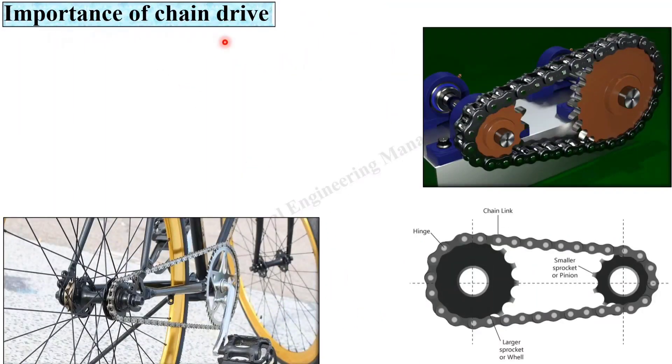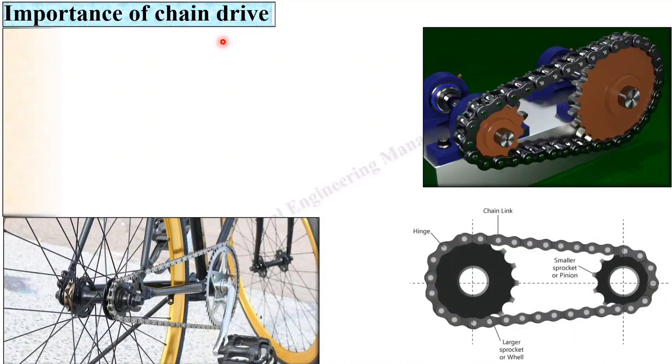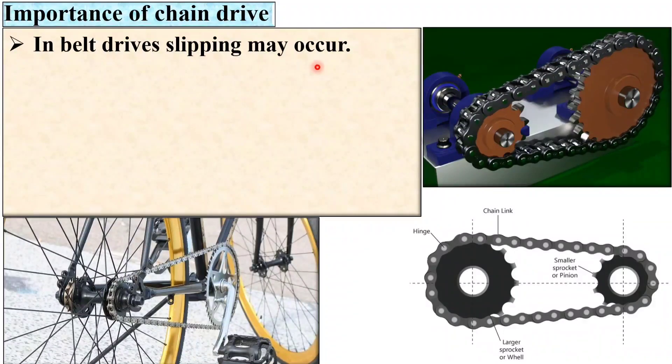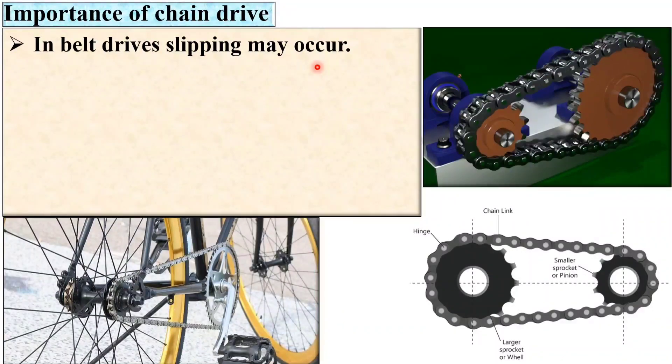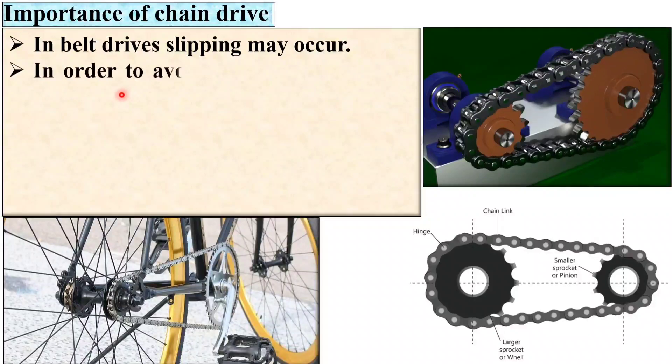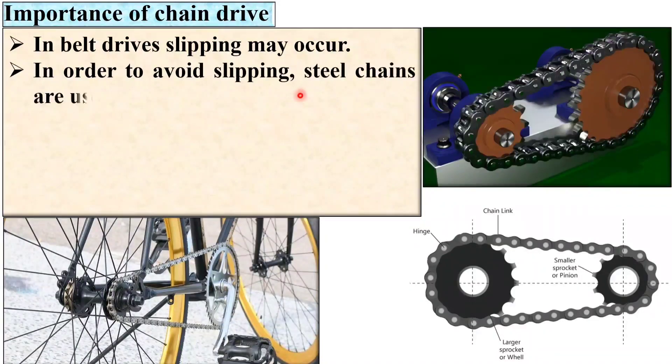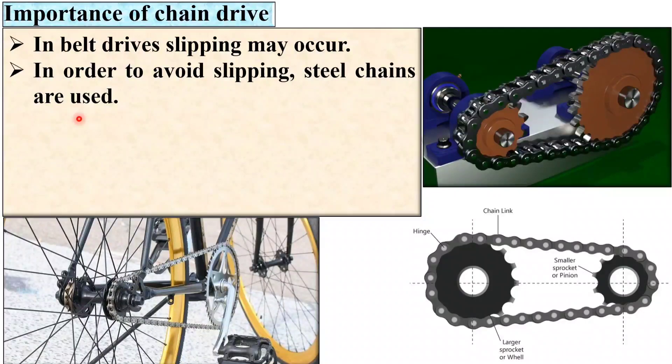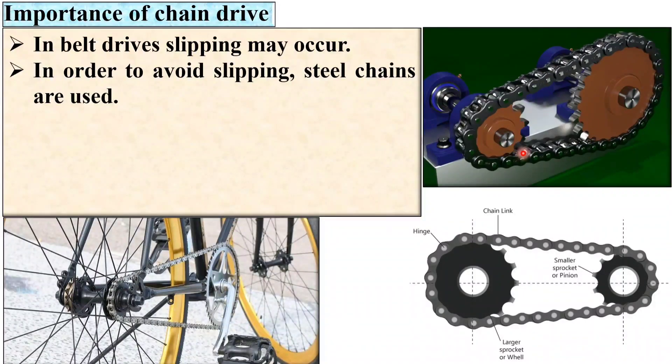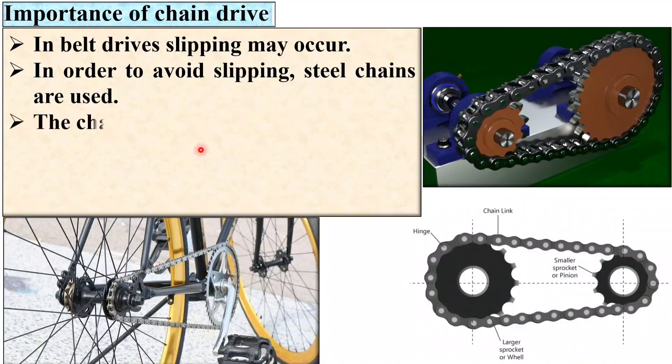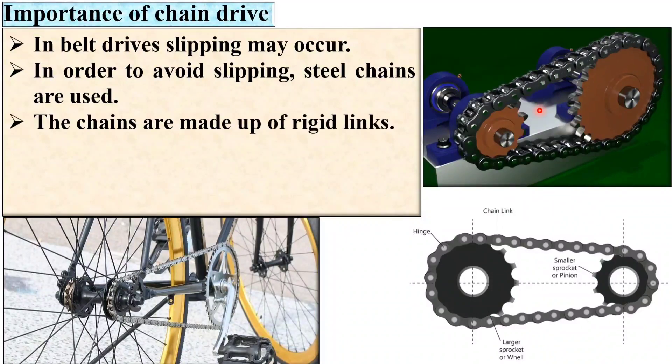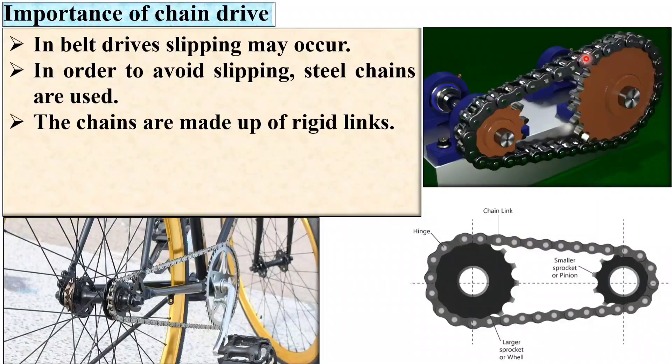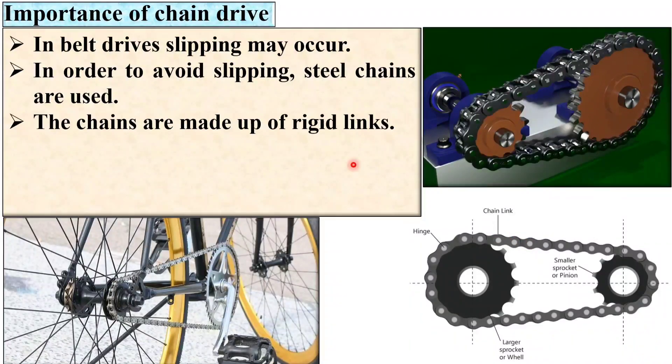Now let's start from the first topic, importance of the chain drive. In belt drives slipping may occur. In order to avoid slipping in case of power transmission, steel chains are used. Here you can see the steel chains. The chains are made up of rigid links. Here you can see in this figure all are the rigid links.